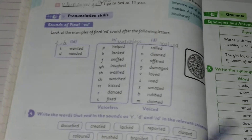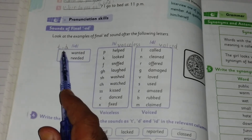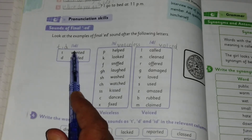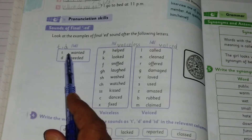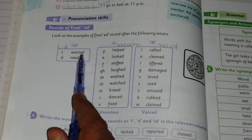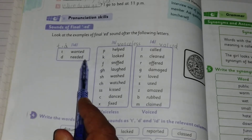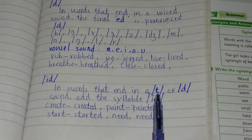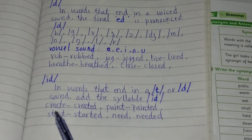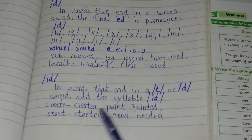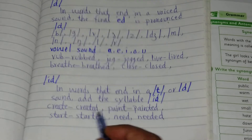Now the last one is the 'id' sound. In words that end in a 't' or 'd' sound, the '-ed' adds a syllable pronounced 'id'. If a word ends in a 't' or 'd' sound, its pronunciation will be 'id'. For example: 'want' → 'wanted' (id sound), 'need' → 'needed' (id sound). More examples: 'create' → 'created', 'paint' → 'painted', 'start' → 'started', 'need' → 'needed'. In all these words, the final '-ed' is pronounced 'id'.